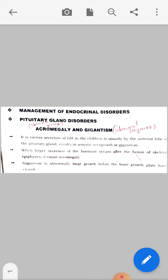Results in somatic overgrowth or gigantism due to excess secretion of growth hormone. When hypersecretion of the hormone occurs after the fusion of skeletal epiphysis, it causes acromegaly. Gigantism is abnormally large growth before the bone growth plates have closed.